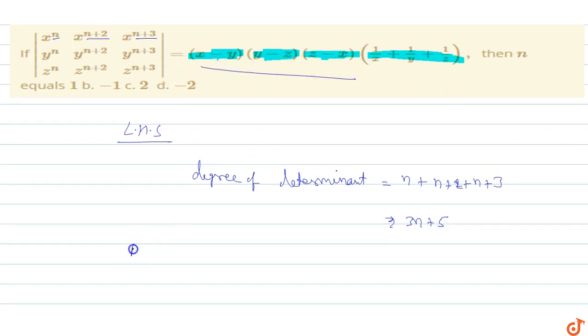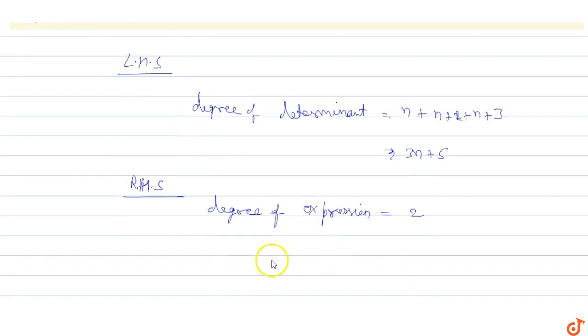Degree of expression on RHS equals to 3 minus 1 is 2. So degree equals to 2.